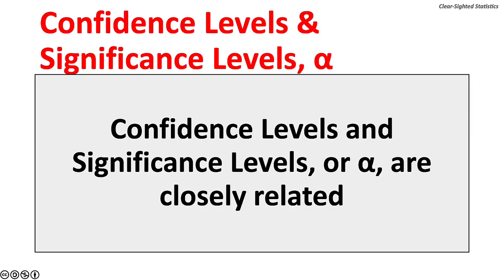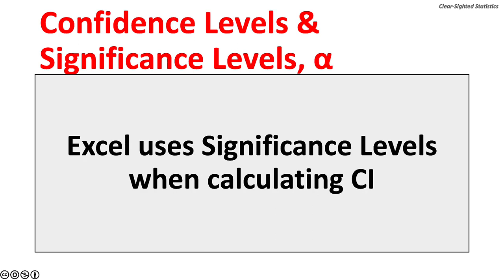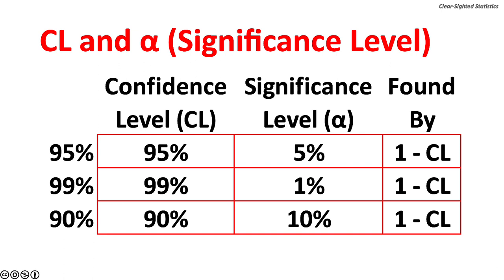Confidence levels and significance levels, or alpha, are closely related. One minus the confidence level equals the significance level, and one minus the significance level equals the confidence level. It is important to note that Microsoft Excel uses significance levels, not confidence levels, when calculating confidence intervals. A 95% confidence level corresponds to a 5% significance level. A 99% confidence level corresponds to a 1% significance level.